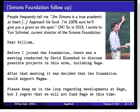David is a great guy and is no longer head of the Simons Foundation. Now Yuri Tschinkel is the director, so I wrote to him. People kept telling me they were sure the Simons Foundation would fund SAGE — 'I'm 100% sure they will fund SAGE on the spot.' So I had to write. Yuri responded: 'Before I joined the foundation, there was a meeting conducted by David to discuss possible projects in this area, including SAGE. After that meeting, it was decided that the foundation would support Magma. I regret that we will not fund SAGE at this time.' That was kind of frustrating.